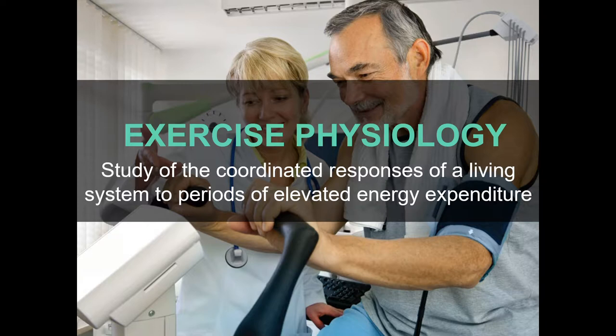I changed this a little bit from the slides you have online — I tried to make it a bit simpler, a bit more direct. Coordinated responses could be things that happen right now, or they could be adaptations that happen as you pursue an exercise training program over the course of weeks. One response to lifting weights might be that you gain more muscle mass and become stronger — that would still be within the realm of exercise physiology. But the acute demands are different from the chronic adaptations; they're all responses though.